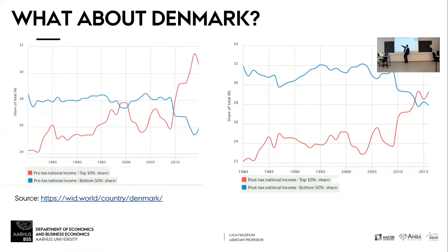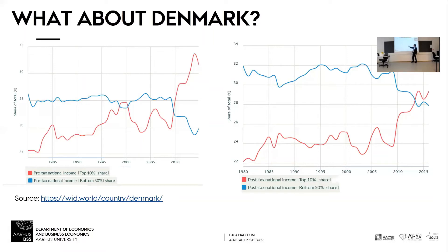Now look at the levels. Before taxes, the bottom 50% earns about 20–28% of national income, and the top 10% was earning about 24%. After taxes, you can see that inequality is shrinking, because the bottom 50% actually earn a bit more of the total national income after taxes, whereas the richest 10% make a little less.